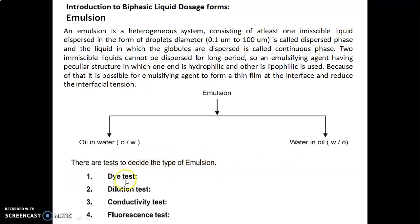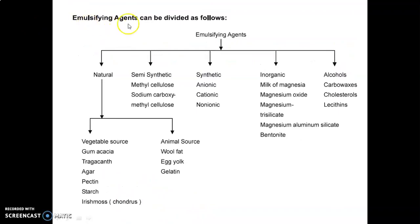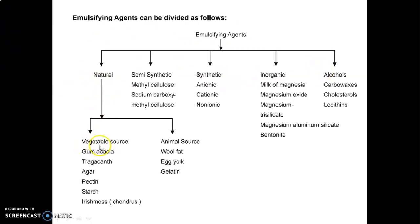There are four tests to determine the type of emulsion: the dye test, dilution test, conductivity test, and fluorescence test. Emulsifying agents can be divided as follows: natural, semi-synthetic, synthetic, inorganic, and alcohols. In natural agents, there are two types — vegetable source and animal source. From vegetable sources, we have gum acacia, tragacanth, agar, pectin, starch, and Irish moss (Chondrus).